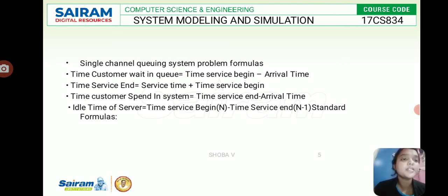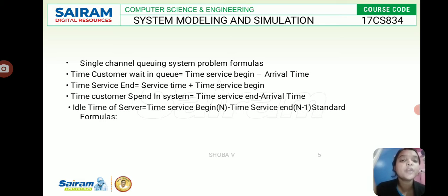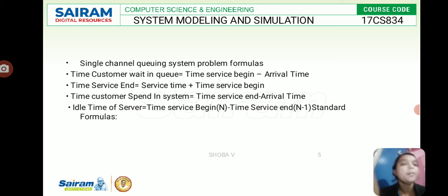The key formulas are: time customer waits in a queue equals time service begins minus arrival time. Time service ends equals service time plus time service begins. Time the customer spends in the system equals service end time minus arrival time. The idle time of the server equals time service begins for customer n minus time service ends for customer n minus one. These formulas will be used to solve problems in the next sessions.